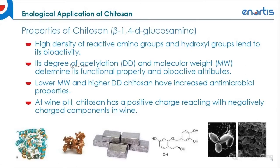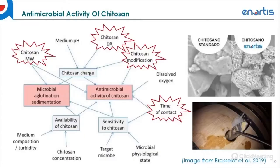Here we have some technical material on the properties of Ketozan. The important takeaway is to focus on the degree of acetylation and the molecular weight, which determine its functional properties and bioactive attributes. Lower molecular weight Ketozan with a higher degree of deacetylation has increased antimicrobial properties. At wine pH, Ketozan has a very positive charge, which can react with various negatively charged wine components such as proteins, metals, phenolics, and various wine microorganisms. The antimicrobial activity of Ketozan is really a function of the molecular weight, the medium pH, the degree of deacetylation, and any modifications made to the product.